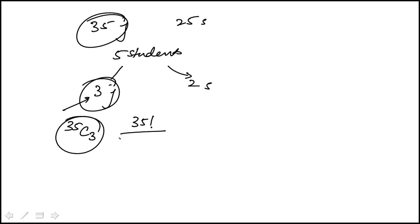This is 35 factorial over 32 factorial times 3 factorial.